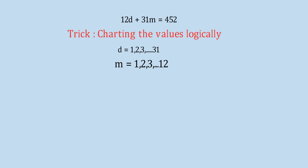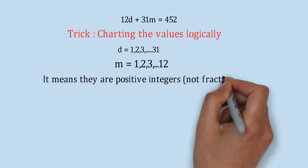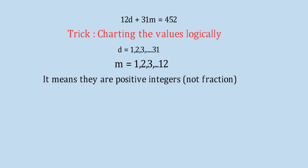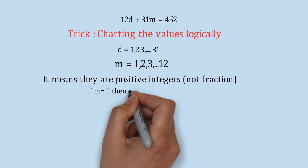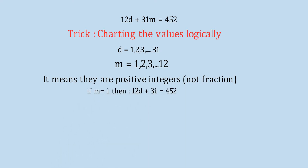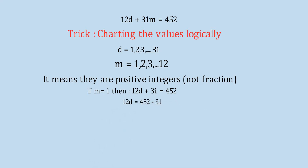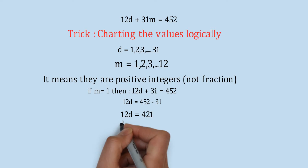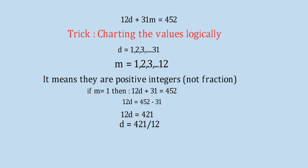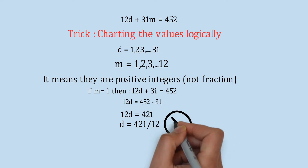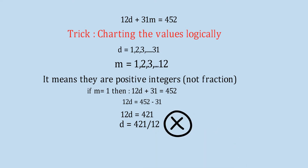Days and months must be positive integers, not fractions, because days or months cannot be fractions and they are not negative. So they are positive integers only. If M equals 1, then 12D plus 31 equals 452, so 12D equals 421. But 421 is not divisible by 12, so it remains a fraction - this possibility is ruled out, it is not possible.